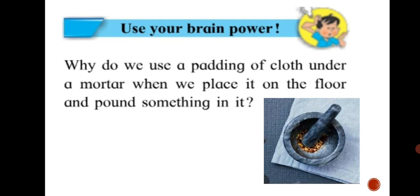Similarly, the layer of fat in the body protects our internal organs. An injury from outside does not at once cause damage to our bones or other internal organs. Now, use your brain power. Why do we use a padding of cloth under a mortar? You can see a picture here of a mortar and a cloth beneath it. When we place it on the floor and pound something in it, why do we use a padding of cloth? It is to absorb the jerks caused by the pounding done and thereby protect the floor from any damage.